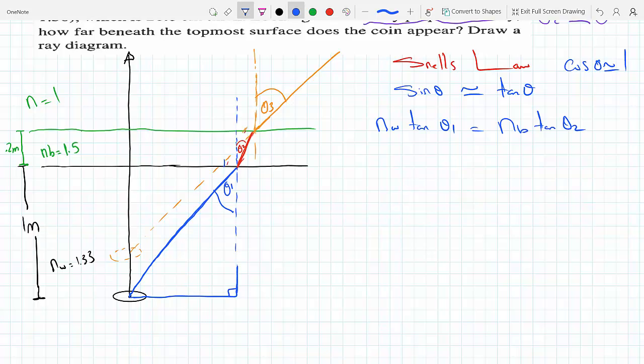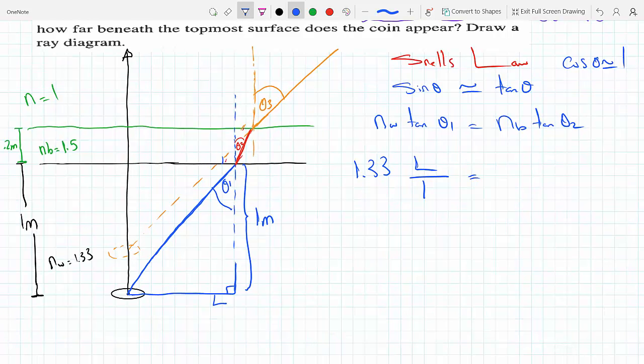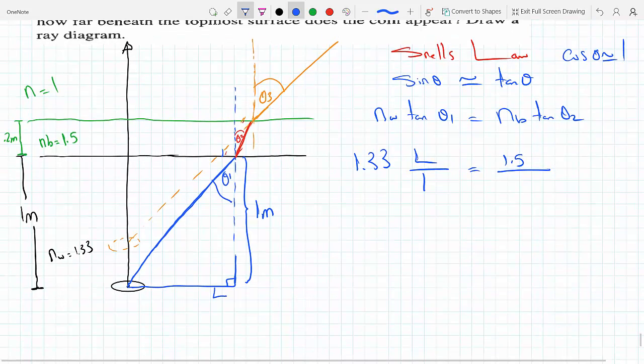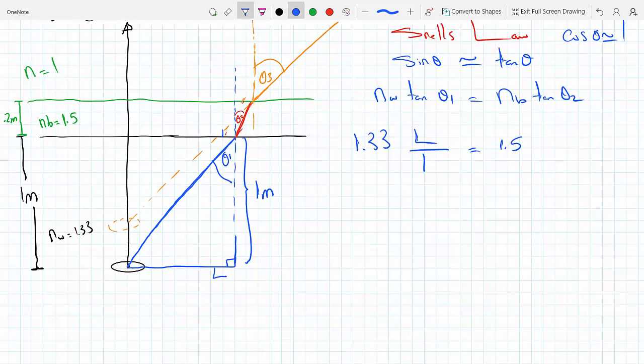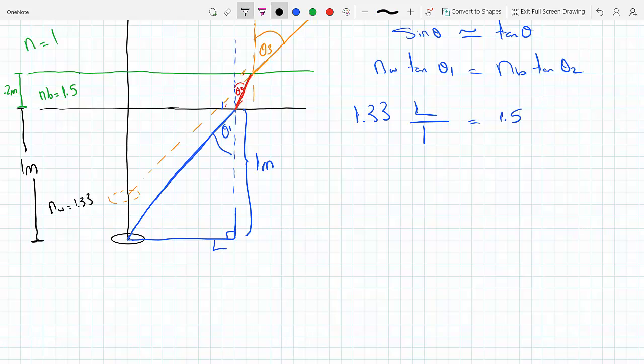Let's call this distance L. This is one meter. So 1.33 tan theta1 will be L over 1, equals n_b which is 1.5 tan theta2. Now let's extend this triangle from theta2 all the way till it hits here so I can use the same L.